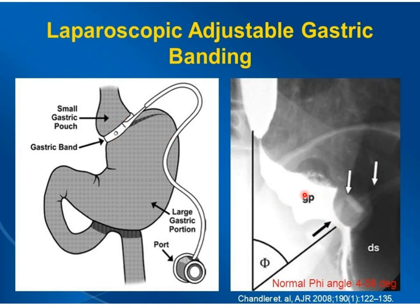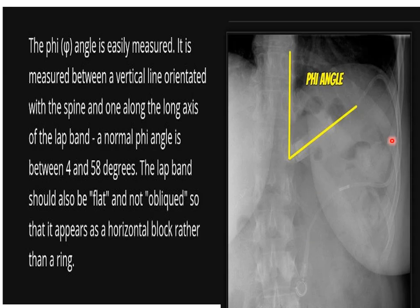Post-operatively, the phi angle is important for the gastric band. The phi angle is drawn between a line along the spine and a line along the long axis of the band. The normal phi angle should be between 4 and 58 degrees. When this angle is increased beyond 58 degrees, it means the gastric band is in a wrong or malpositioned state — this is called slippage. Also, the gastric band should appear in a block shape, not a ring shape, because a ring shape indicates slippage.